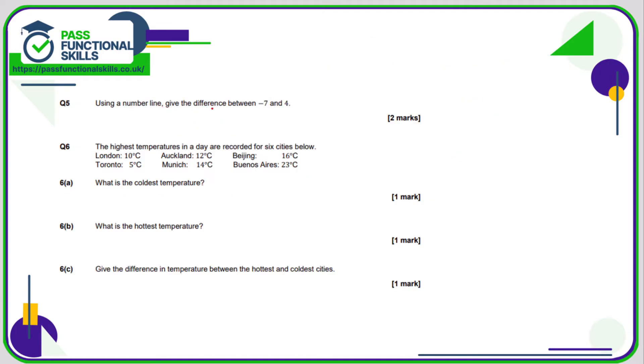So using a number line, what is the difference between negative seven and four? Let's do our number line: minus seven, minus six, minus five, minus four, minus three, minus two, minus one, zero, and then one, two, three, four.